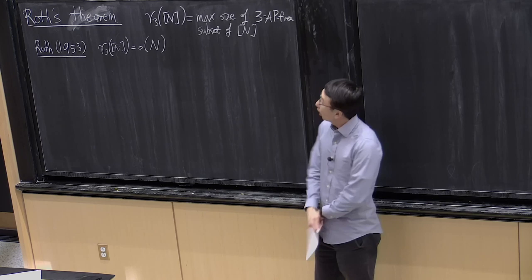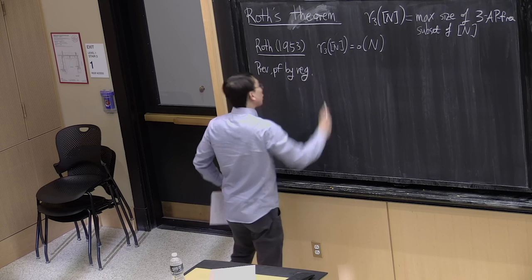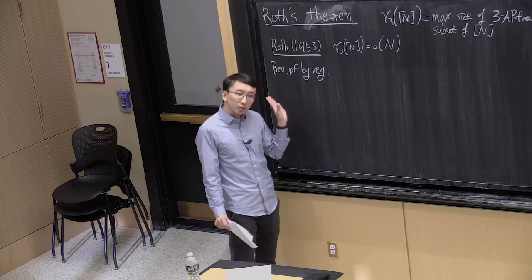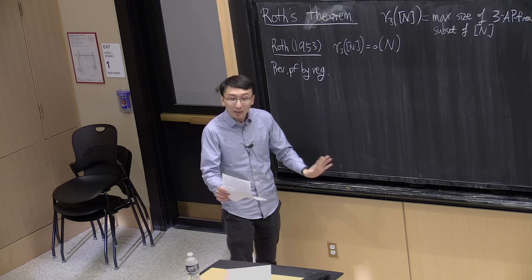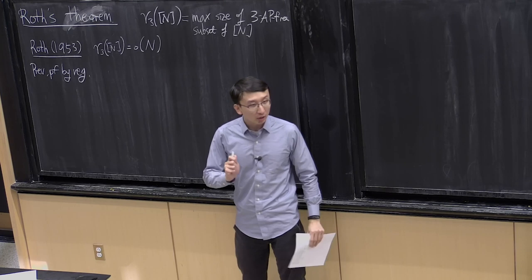Previously we gave a proof using regularity. The regularity approach of Szemerédi was only found in the 1970s, so Roth's original proof was through Fourier analysis. Today we'll see a version of this proof — it has the same ideas but in a slightly easier setting with fewer technicalities. Before showing you that, let me discuss a bit of history around Roth's theorem.